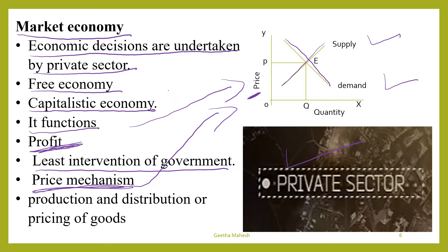In the market economy, price mechanism or market mechanism plays an important role. Price mechanism is a process of determining the price of a product on the basis of market forces, that is demand and supply. No individual, organization, or government is responsible for production, distribution, or pricing of goods and services. In the market economy consumers are known as sovereign or king makers, because if demand for a product increases, the producer of that product becomes a king in the market. So producers give much more importance to consumers' needs, requirements, and choices.